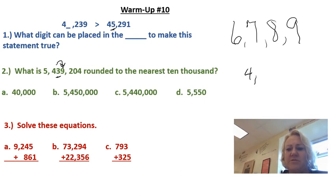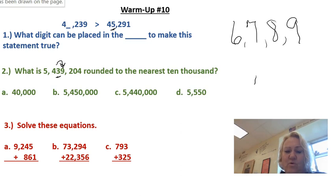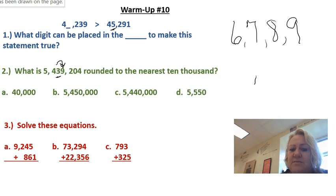Our next problem, number two asks, what is 5,439,204 rounded to the nearest 10,000? Well, you have to look at what number is in the 10,000 position. The number here is the number three.